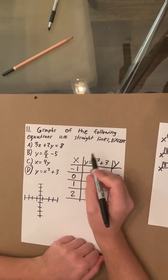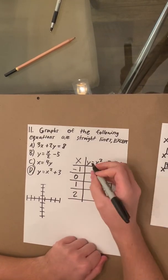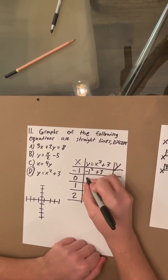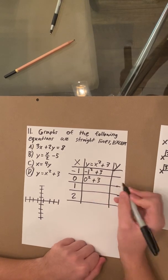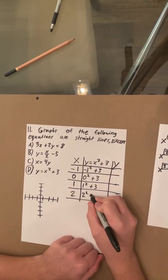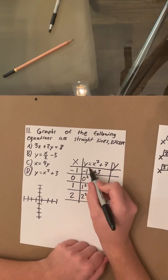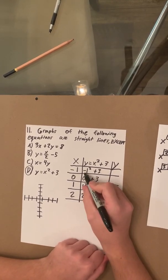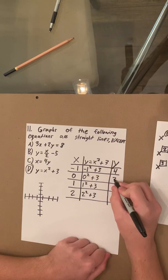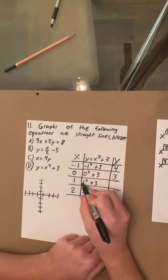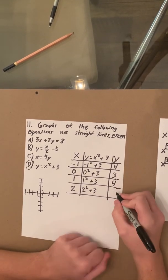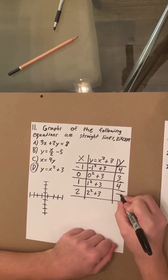When you're solving for y, all you're going to do is plug the x value into your equation. So we're going to have negative 1 squared plus 3, then 0 squared plus 3, then 1 squared plus 3, and 2 squared plus 3. Negative 1 squared is negative 1 times negative 1, which equals positive 1, plus 3 equals 4. Zero times 0 is 0, plus 3 equals 3. One times 1 is 1, plus 3 equals 4. Two times 2 is 4, plus 3 equals 7.